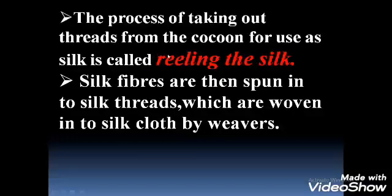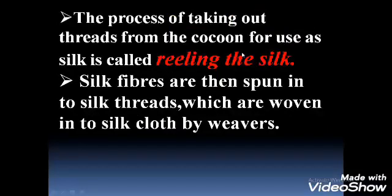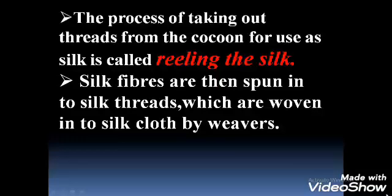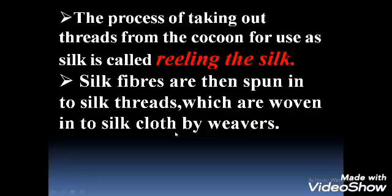The process of taking out threads from the cocoon for use as silk is called reeling the silk. This is a new term — reeling is done in special machines which unwind the threads or fibers of silk from the cocoon. Silk fibers are then spun into silk threads, which are woven into silk cloth by weavers.